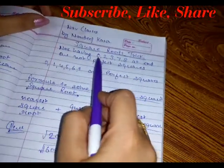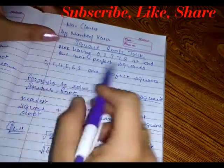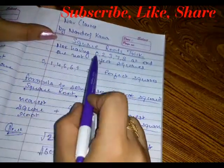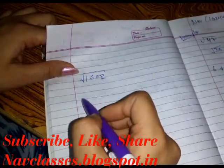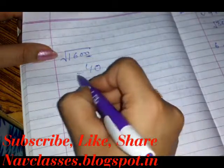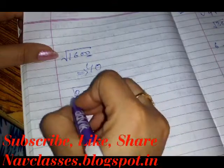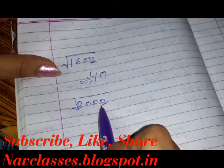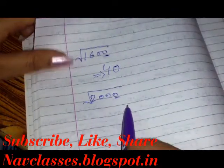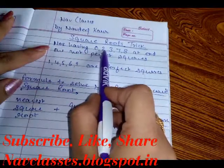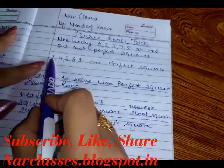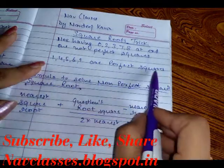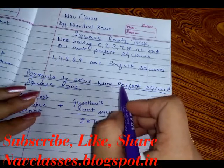There is one digit common to both non-perfect and perfect squares, which is 0. For example, the square root of 1600 is a perfect square, having 0 at the end — we can derive its square root straight away. But for 2000, it is not a perfect square. Digits ending in 0, 2, 3, 7, 8 are non-perfect squares, and digits ending in 1, 4, 5, 6, 9 are perfect squares.